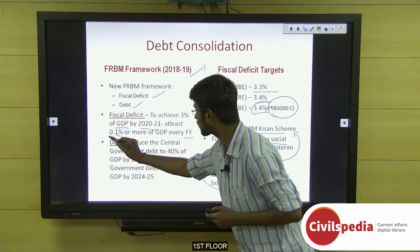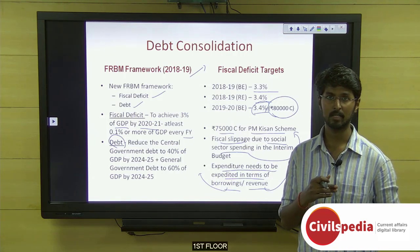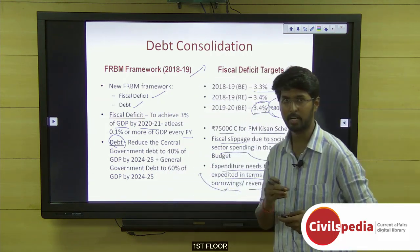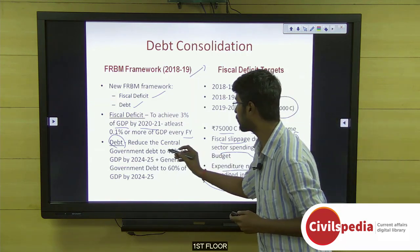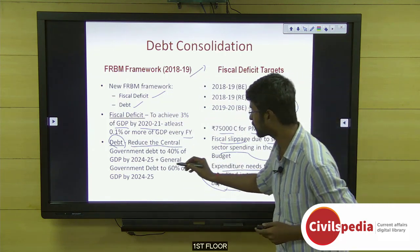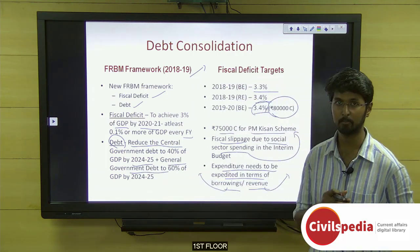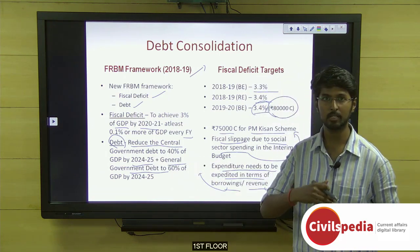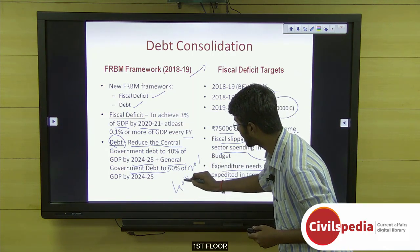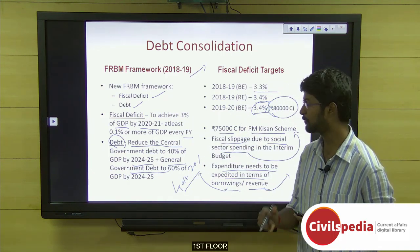The second component is the debt component. The central government has taken the recommendations of the NK Singh Committee, released in April 2017. That committee recommended reducing central government debt to 40% of GDP by 2024-25, and general government debt (central plus state governments) to 60% — meaning 40% for central government and 20% for state governments.